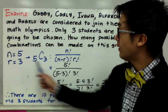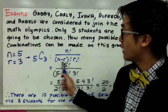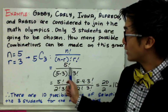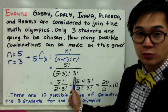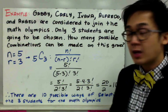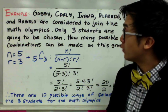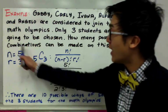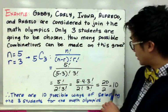Using the formula n factorial over n minus r factorial times r factorial, we have 5 factorial over 5 minus 3 factorial times 3 factorial. To simplify the factorial notation, the number of ways we can choose 3 students out of 5 is equal to 10.